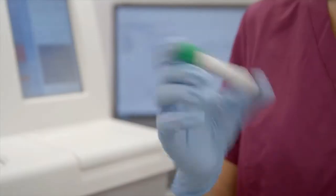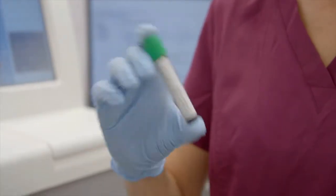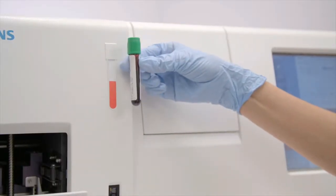To begin, gently invert the collection tube a few times. To determine if there is enough sample, compare the sample level in the tube against the sample volume gauge.